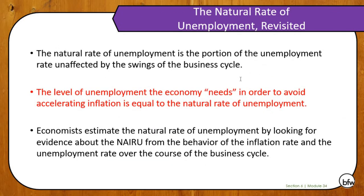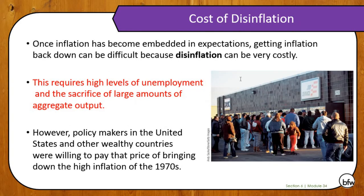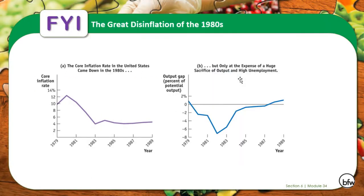The natural rate of unemployment is the level of unemployment that the economy needs in order to avoid accelerating inflation. When it comes to costs of disinflation: once inflation becomes embedded in expectations, getting inflation back down can be very difficult and costly. It requires high levels of unemployment and the sacrifice of large amounts of aggregate output. The Federal Reserve brought inflation down post-stagflation, but it took a lot of economic pain for most people.